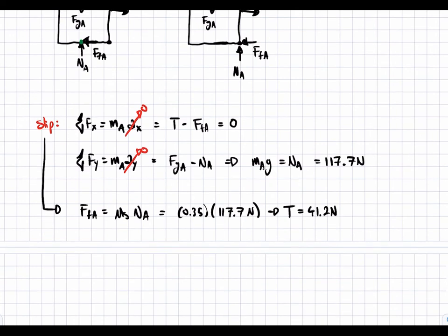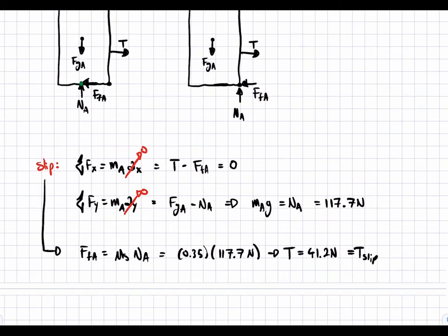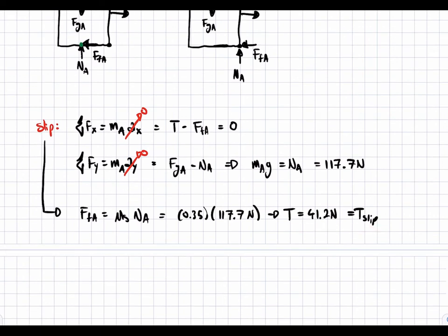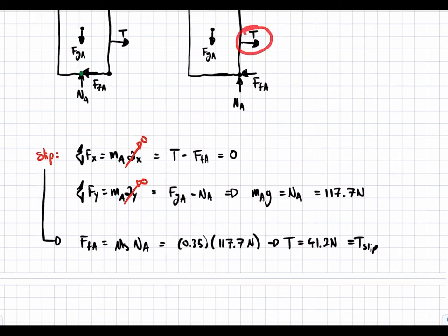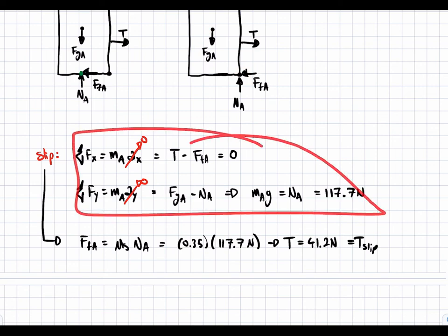This gives us T_slip equal to 41.2 Newtons. This is the minimum force required for this block to overcome the force of friction. We don't know yet if tipping occurs at this force, but we know that once we go past this force the block is going to slip, because this tension force overcomes the maximum friction force determined by the normal force from gravity.